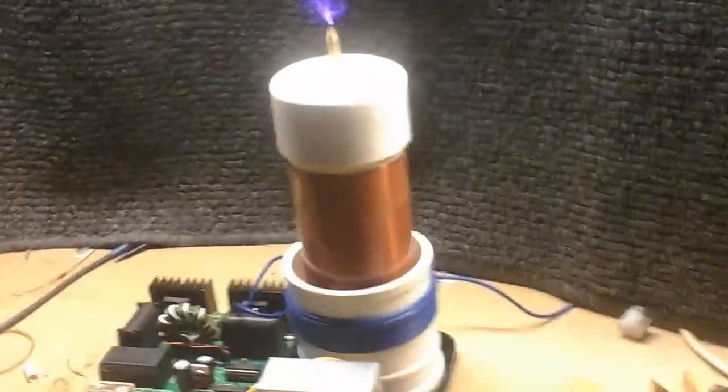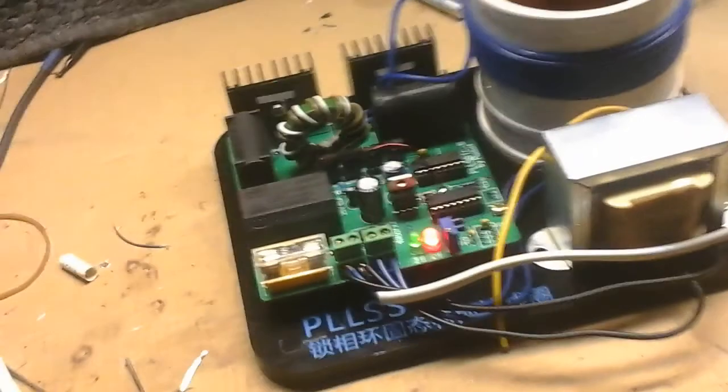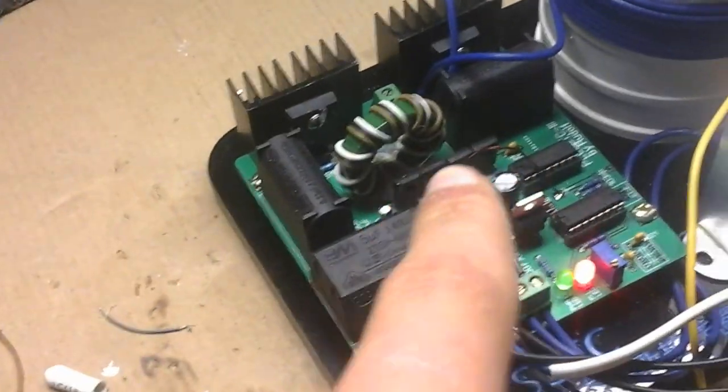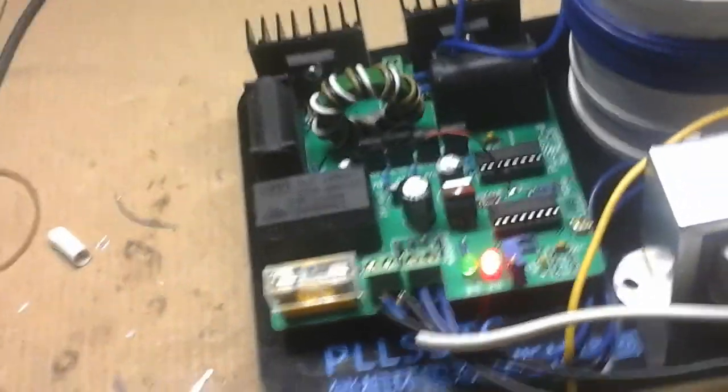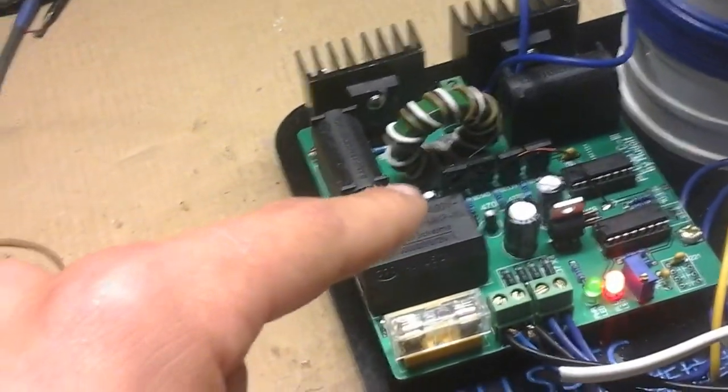That was not the Tesla coil blowing up. That was something falling over in the back, so don't worry. This is a very nice Tesla coil. This is a strange little wire right here with an antenna symbol on it. It seems the arcs get longer if you put it near the capacitor, which is very strange.